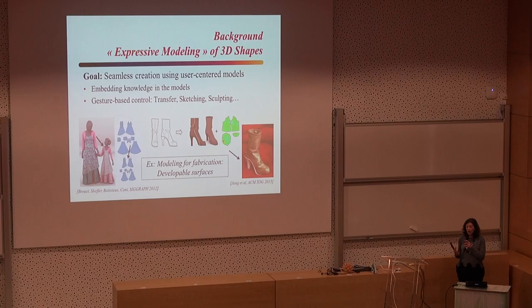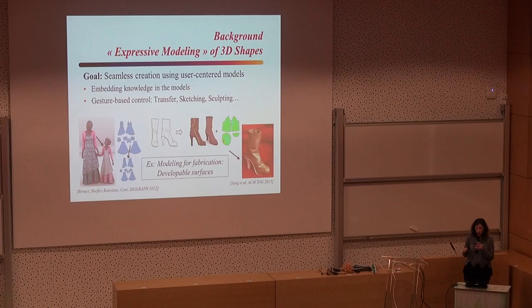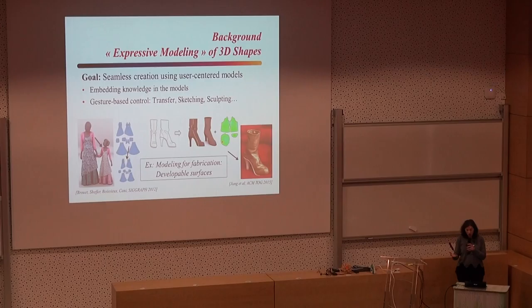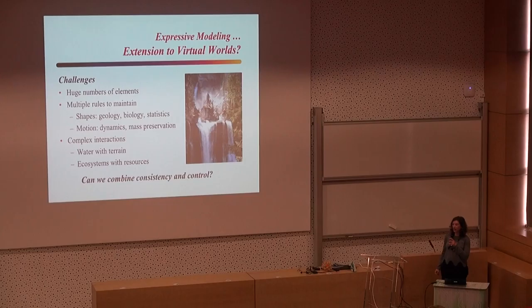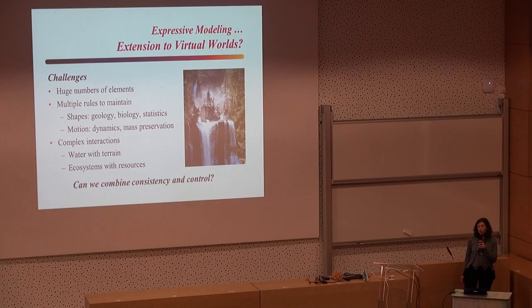One gesture is transfer, which is copy-paste. For instance, you take the dress on the woman model and you want to copy it to the children model — that is a transfer gesture. Other gestures can be sculpting gestures or sketching gestures. To make this expressive modeling possible, what you need to do is put knowledge in your model. In these examples on the slide, this knowledge is about developable surfaces, which are models that can also be fabricated because you have a 2D pattern that can be computed. You provide the user with simple, very intuitive gestures that anybody can use, and then you come out with a 3D model.